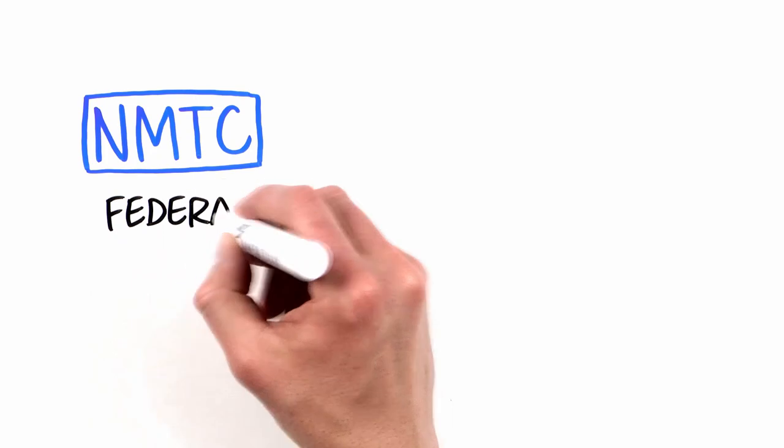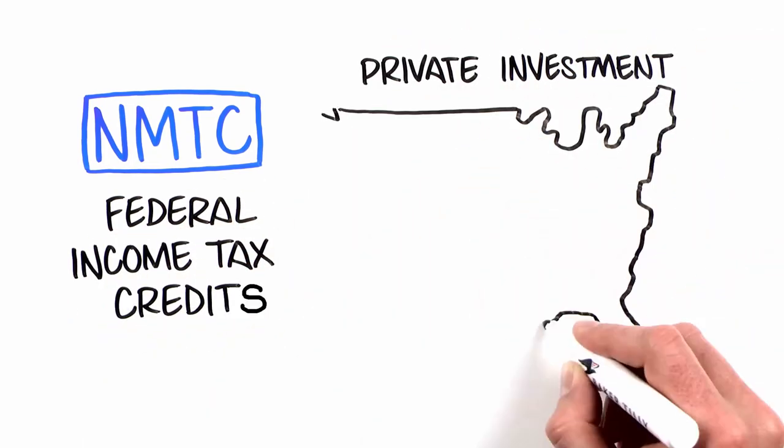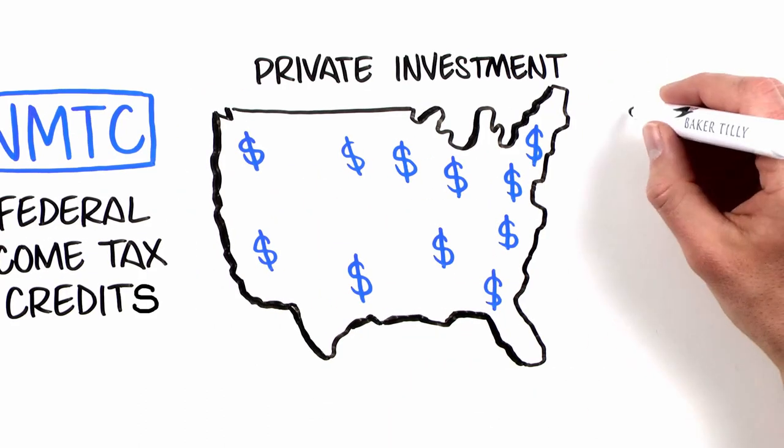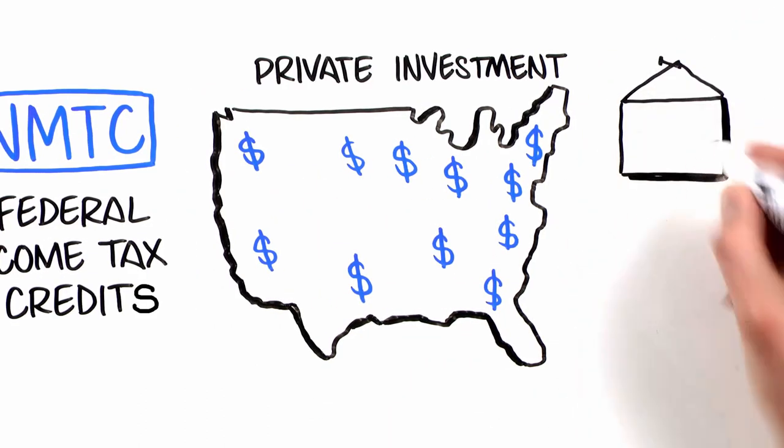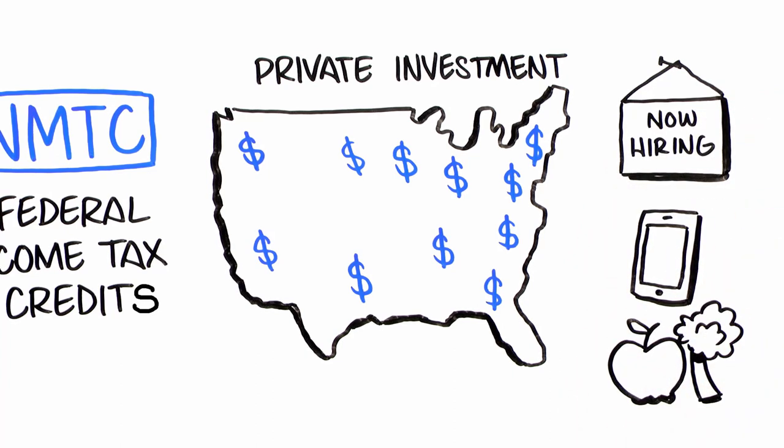New Markets Tax Credits are federal income tax credits used to encourage private investment in low-income communities around the United States. The credits are designed to create measurable community impacts such as job creation, goods and services, and eradicating food deserts.